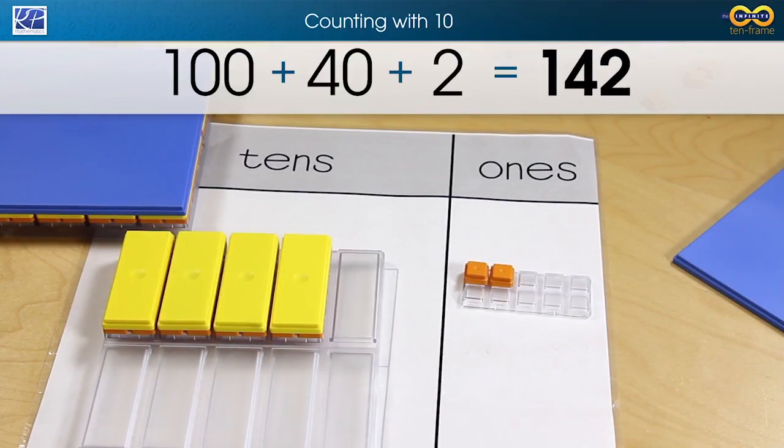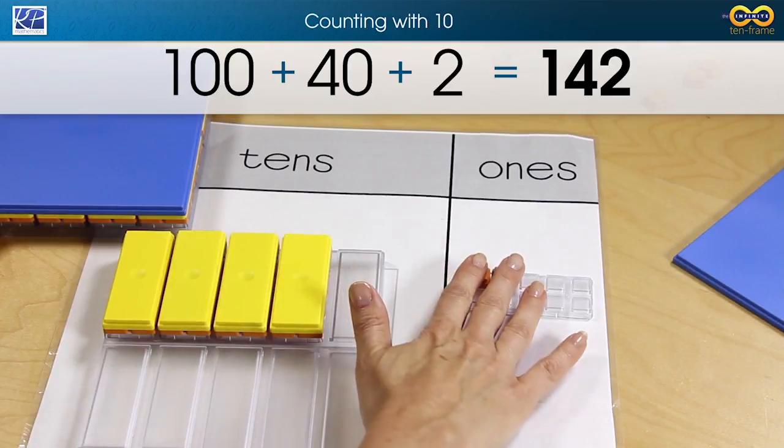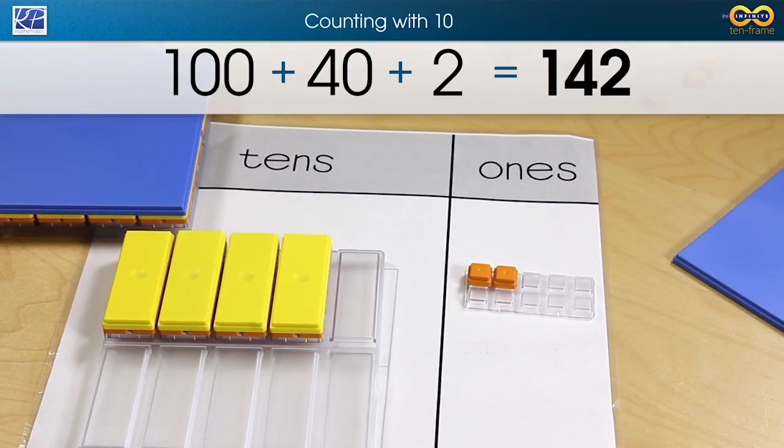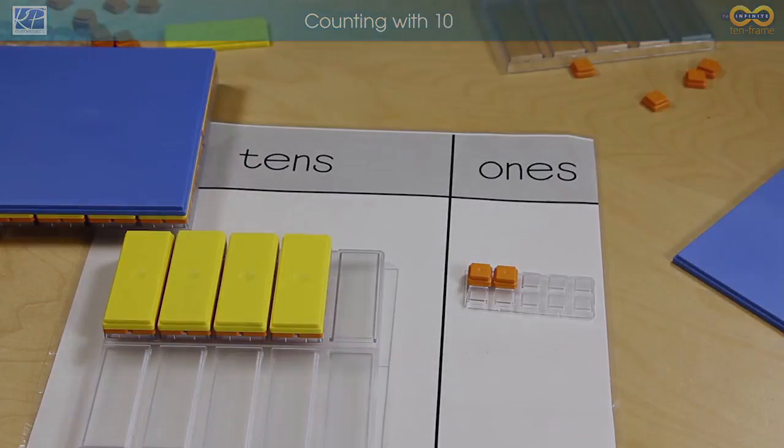So students can use this understanding of 142 to be able to build other ideas and connect place value to notions of addition, subtraction, multiplication, and division.